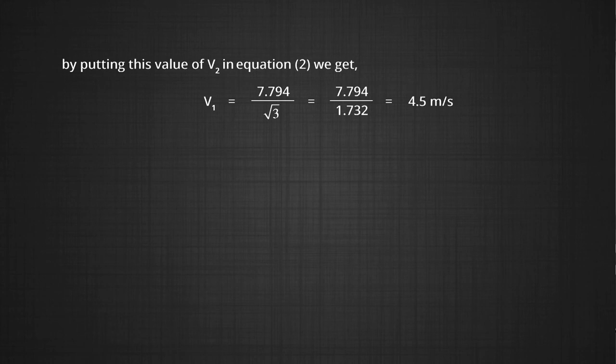Therefore, the speeds of balls P and Q are 4.5 m/s and 7.794 m/s respectively. By practicing these kinds of problems, you can solve more. Thank you.